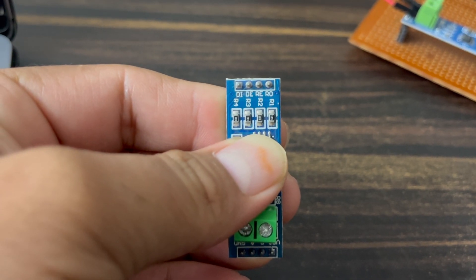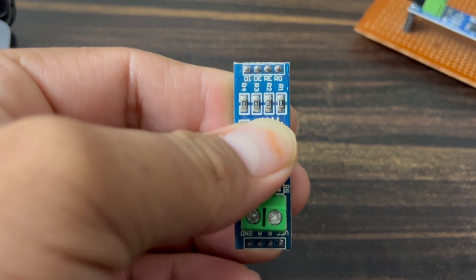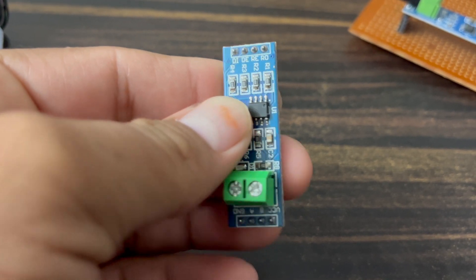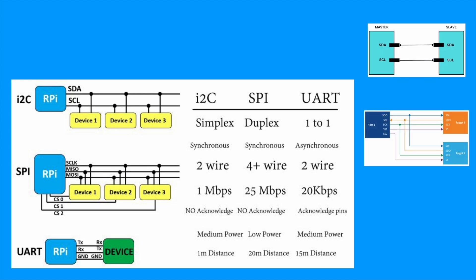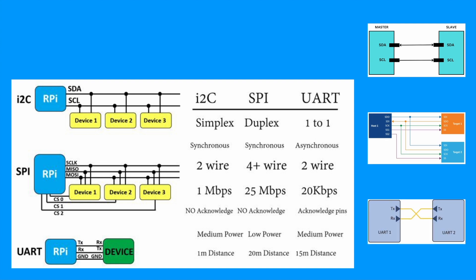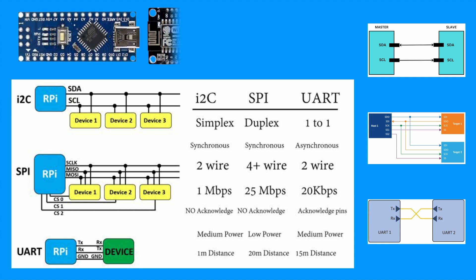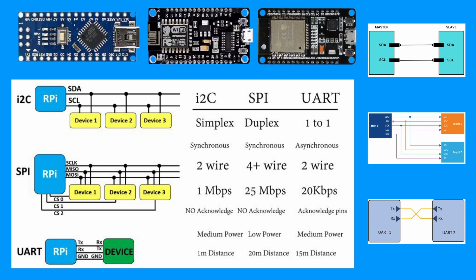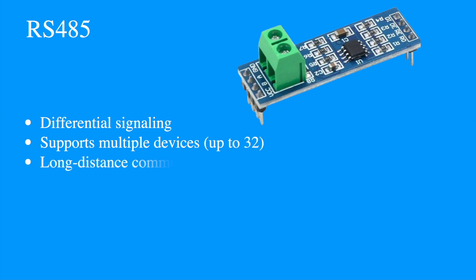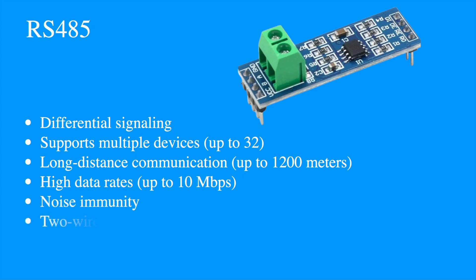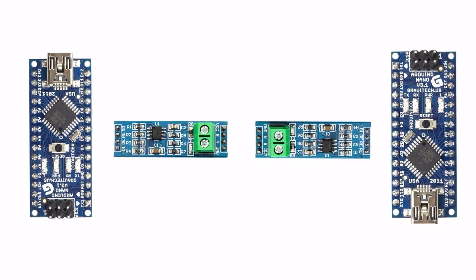I will explain why this module covers such long distances. Microcontrollers have built-in protocols like I2C, SPI, and UART. I2C is a simplex protocol using two wires. SPI is a duplex protocol using multiple wires. UART is a synchronous protocol also using two wires. But both cover only short range. The MAX485 module covers 1200 meters long range, supports high data rates of 10 Mbps, has noise immunity, and communicates using only two wires.